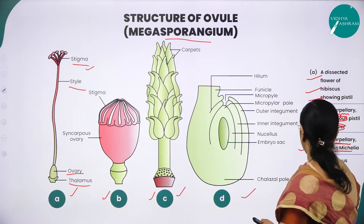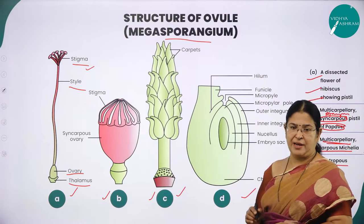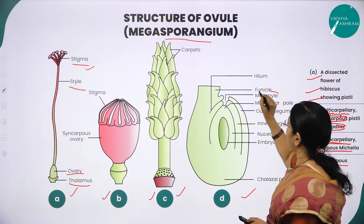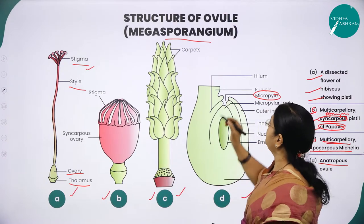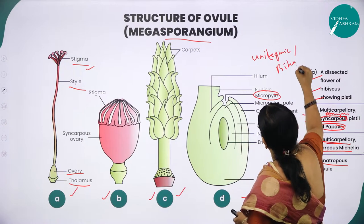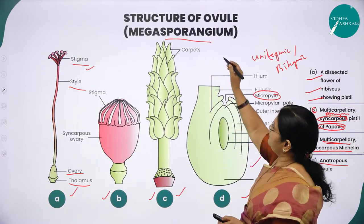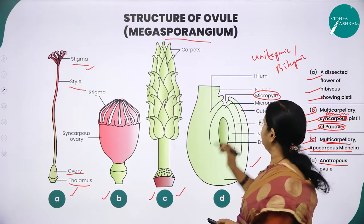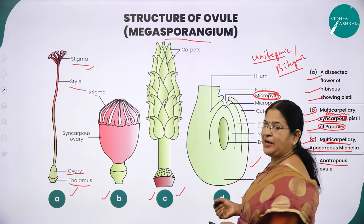This is the picture of an anatropous ovule. An anatropous ovule is a type of ovule where the funicle is bent upon itself and the micropyle is facing the placenta. The ovule may be unitegmic or bitegmic — that is, having one layer or two layers. This is a picture of a typical ovule; ovule is otherwise called megasporangium.